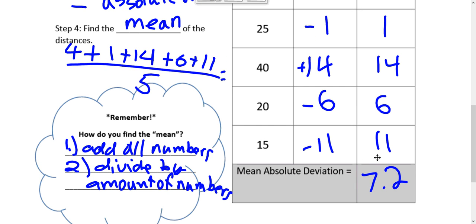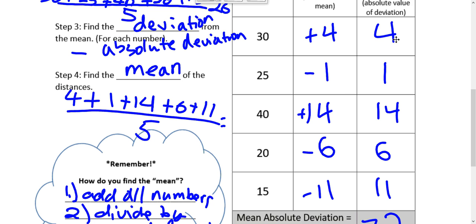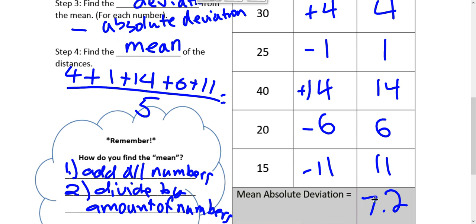So the mean absolute deviation, then we need to find the mean of these distances. So I'm going to add 4, 1, 14, 6, and 11. And then I'm going to divide it by 5 again, because there's 5 deviations or 5 distances. And then I get 7.2.